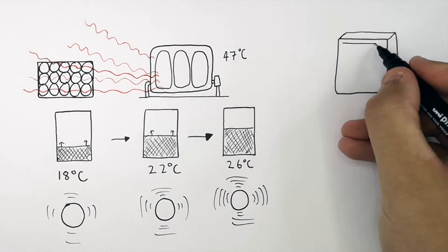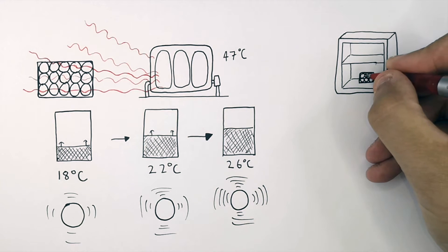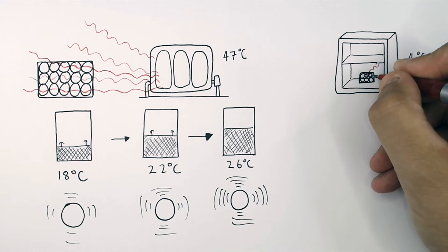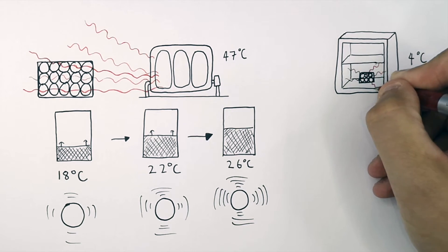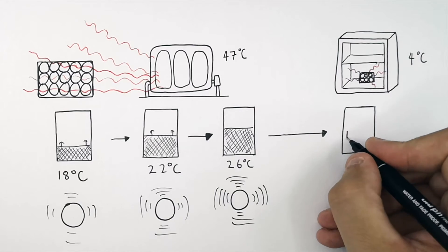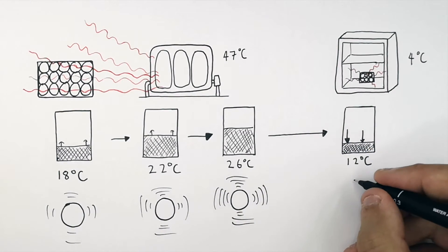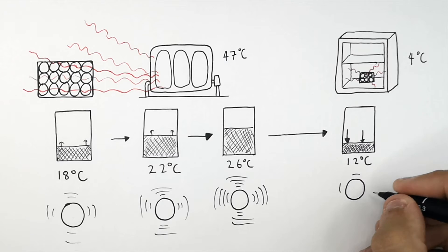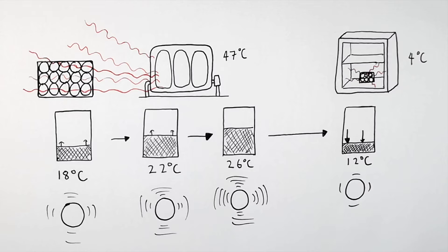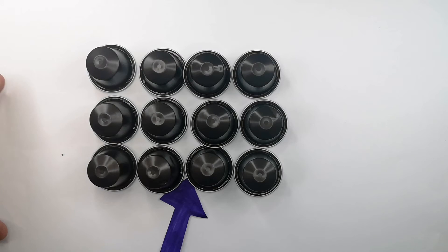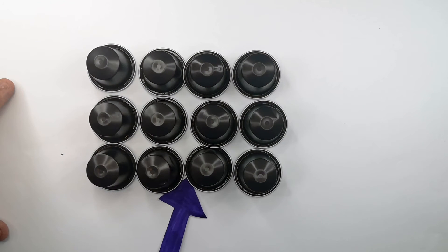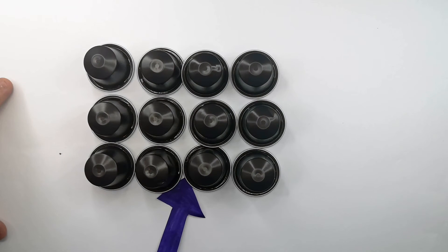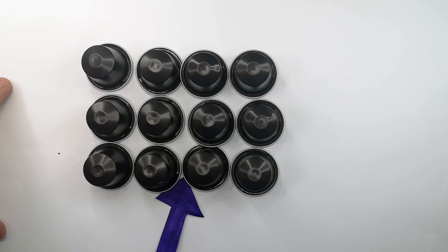Now we put this object into a 4 degrees Celsius fridge. Energy is going to be transferred from the object's thermal energy store to the thermal energy store of the surroundings and the fridge. So at 12 degrees Celsius, the object's thermal energy store will be lower than before, meaning the particles are going to have less kinetic energy in their kinetic energy store and will be vibrating less. Energy is transferred from the thermal energy stores of an object with a higher temperature to the thermal energy stores of an object with a lower temperature. If an object has less energy in its thermal energy store, its particles will have less energy in their kinetic energy store and will be vibrating less than in objects with a higher temperature.